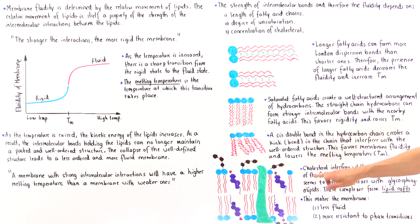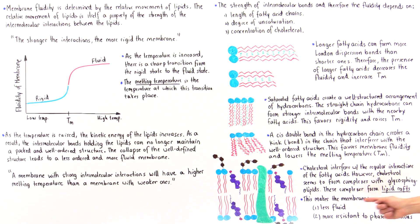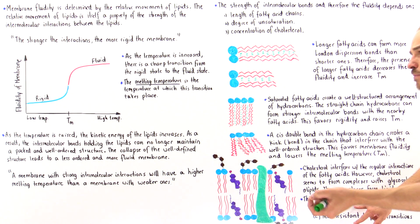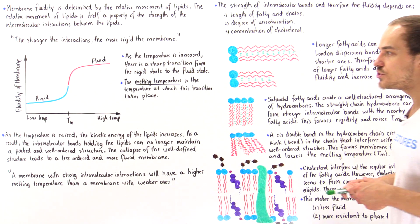Cholesterol, even though it interferes with the regular interactions of fatty acids, forms complexes with glycosphingolipids — a type of glycophospholipid. These complexes form lipid rafts, making the membrane slightly less fluid and more rigid, but at the same time making it much more resistant to phase transitions.